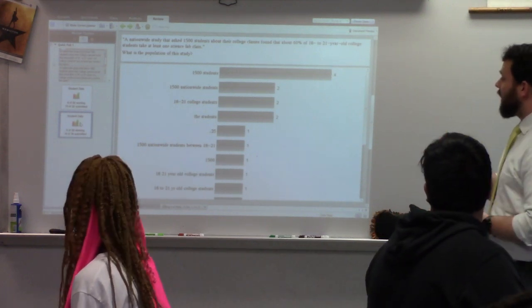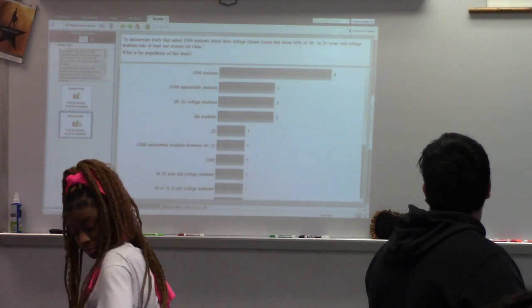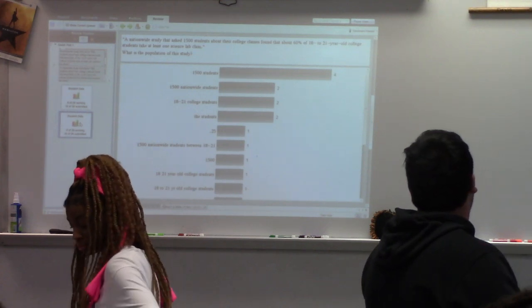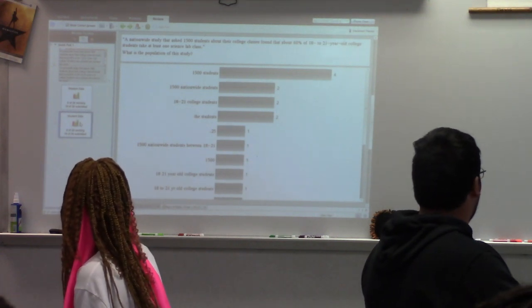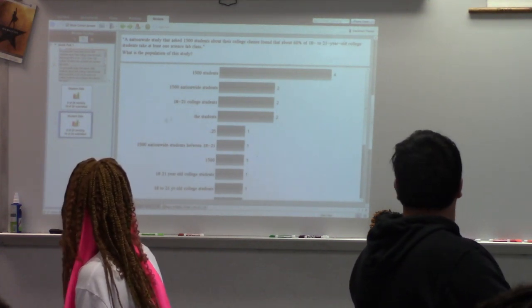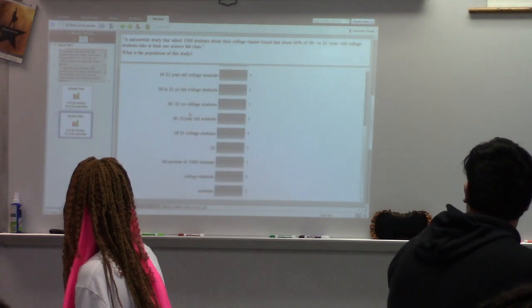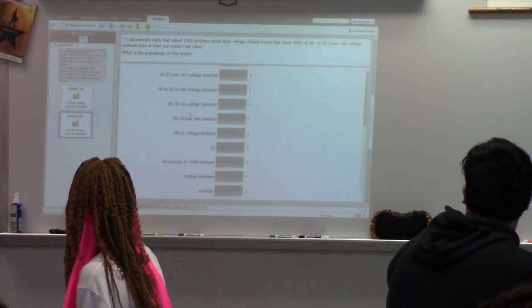But what I see right now are two major different schools of thought. Either we think it's the 1,500 students or it's the 18 to 21-year-old college students. Those are the only two real responses I got. So let's talk about this.